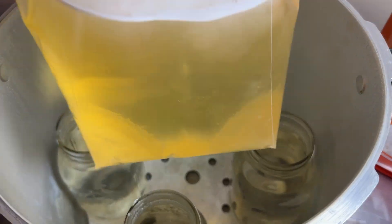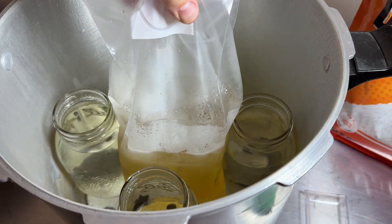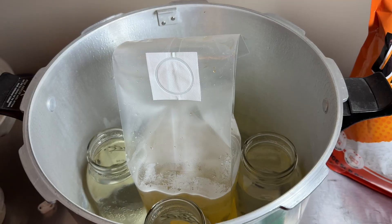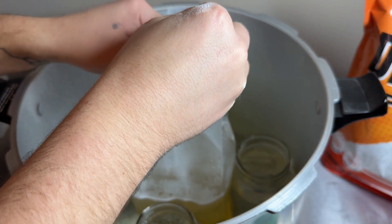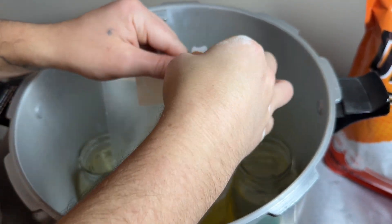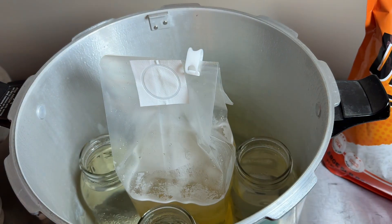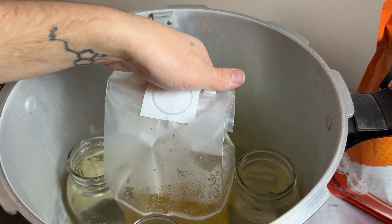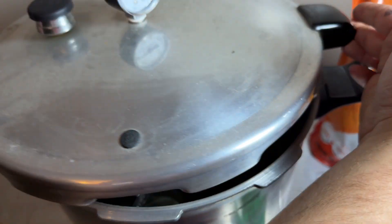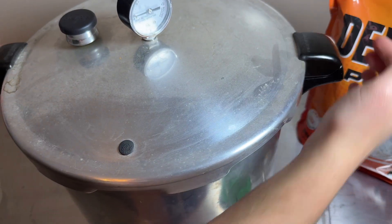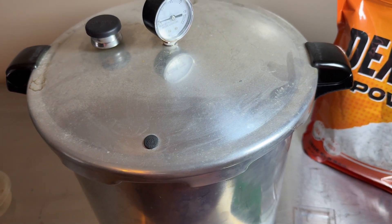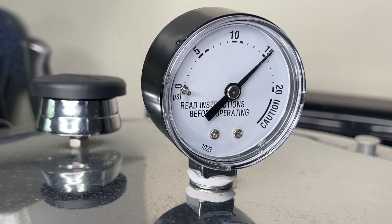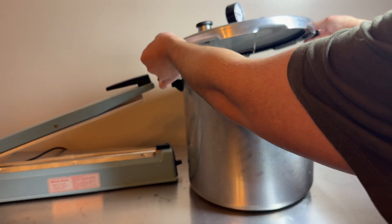The next step is to sterilize the bag, so I put it inside of a pressure cooker with four jars of water on all corners to keep it supported, and then I add these little clips to the top fold of the bag to keep it shut. I pressure sterilize the bag at 15 psi for 25 minutes.